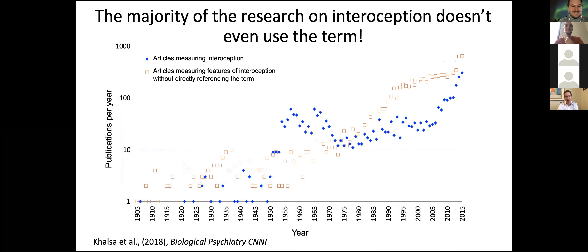If you look more carefully — and this is a review we did a number of years ago — we looked at all articles published that reference interoception directly in blue dots, on a logarithmic scale. But if you look at the actual underlying physiological systems and features, there's almost an order of magnitude more research that has gone on to understand this process without any reference whatsoever to the concept. Most of those studies have been in the animal and physiological realm. Over time, we're going to start seeing more convergence across these fields.